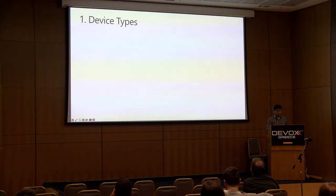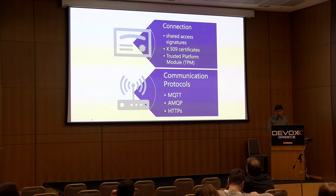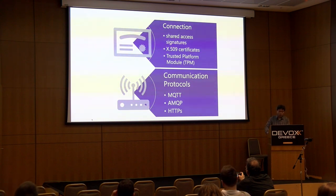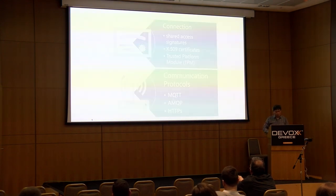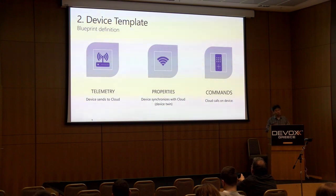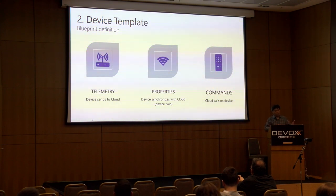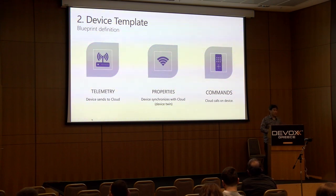You also have to think about how your device connects to the internet — what protocol it will use. The most common and easiest one is MQTT. The next step is the device template — that's the blueprint that tells you what data you'll be receiving and how you'll receive it. Data can include telemetry (what the device sends to the cloud), properties (device twins for synchronizing cloud to device), and commands (calls from the cloud to the device, like 'reboot this device').